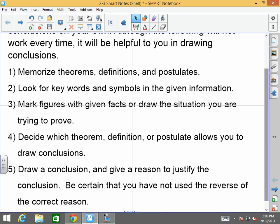Now, I know there's a lot for you guys to write, so keep writing. I'm just going to go over it again, just so it can sink in. Number one, memorize theorems, definitions, and postulates. Number two, look for key words and symbols in the given information. Number three, mark your figures with given facts, or draw the situation you are trying to prove. Number four, decide which theorem, definition, or postulate allows you to draw conclusions. And number five, draw a conclusion and give a reason to justify that conclusion. Be certain that you do not reverse the correct reason.